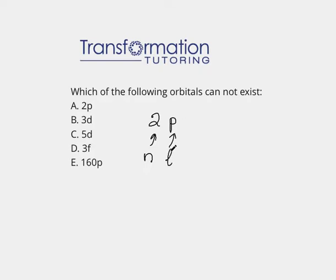For l, we have numbers as well as letter designations. When l is equal to 0, our letter is s. When l is equal to 1, the letter is p. When l is equal to 2, the letter is d. And when l is equal to 3, the letter is f.